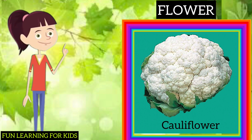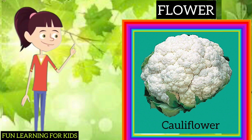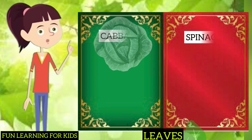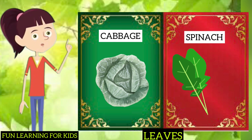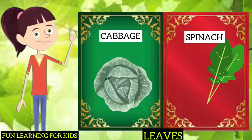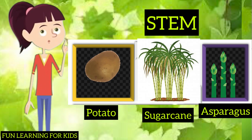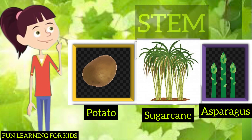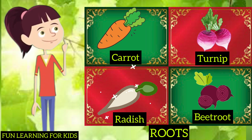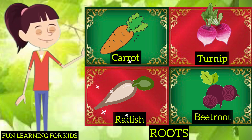Cauliflower is a vegetable but it is a flower — we also eat banana flower. We eat leaves like cabbage and spinach, which are very good for our health. Potato, sugarcane, and asparagus are from the stem. Carrot, turnip, radish, and beetroot are the root vegetables.